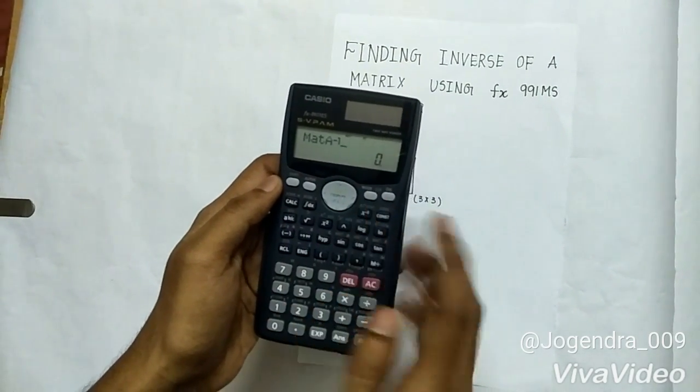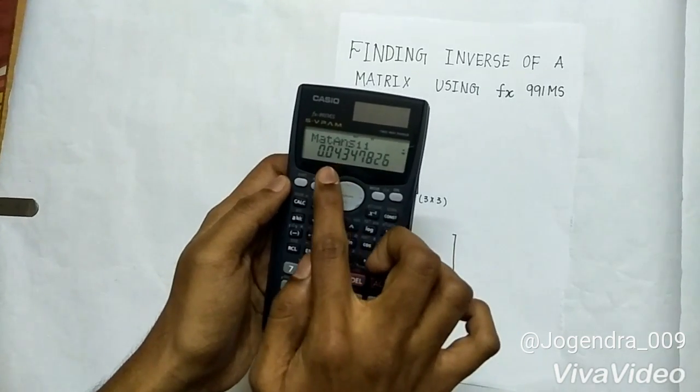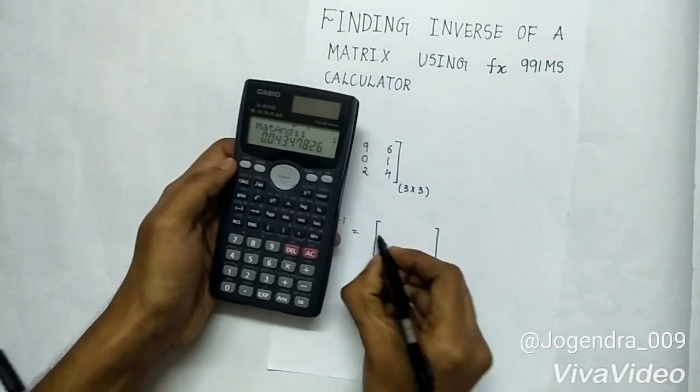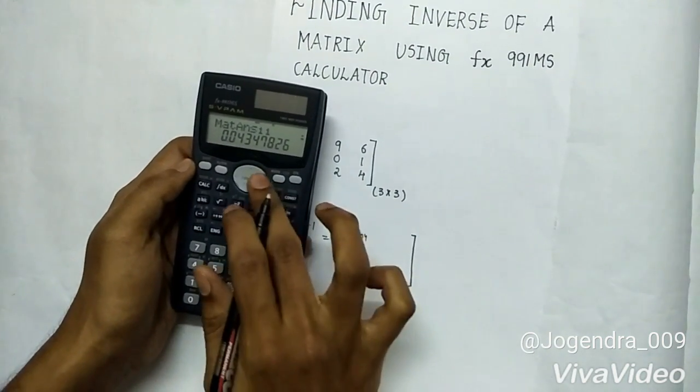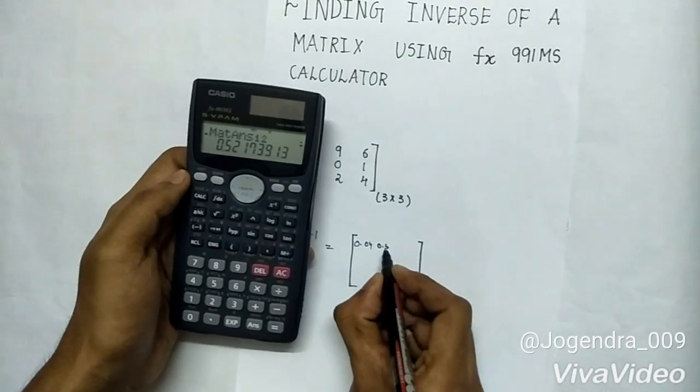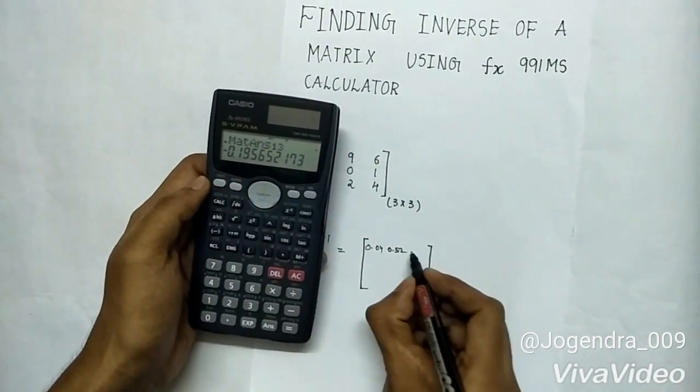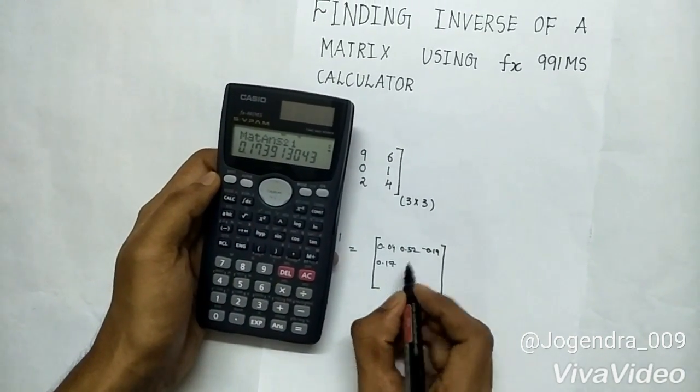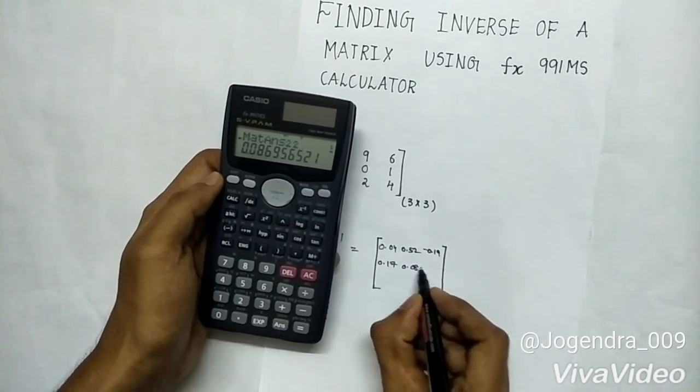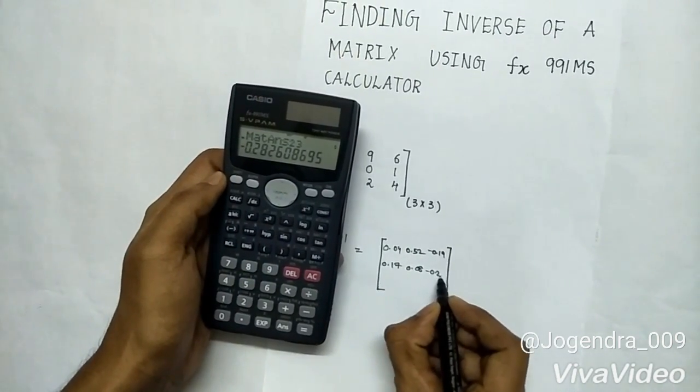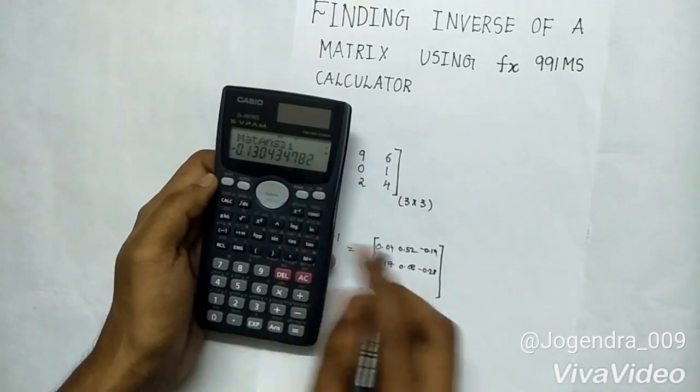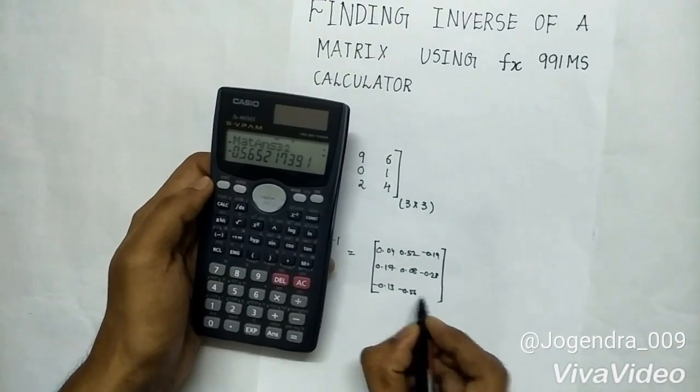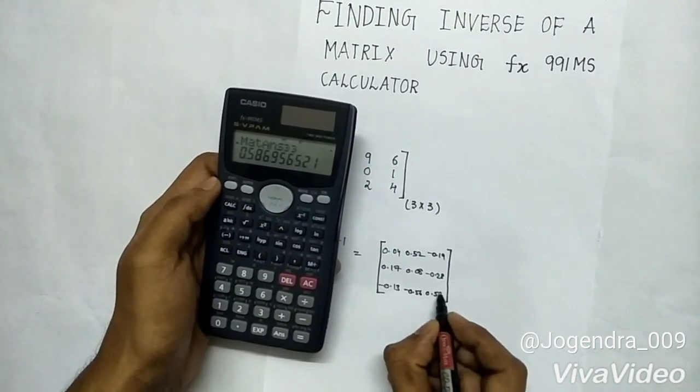Select A and press inverse. So we have found the inverse of matrix to be 0.04, 0.04, 0.52, minus 0.19, 0.17, 0.08, minus 0.18, minus 0.13, minus 0.56, 0.58.